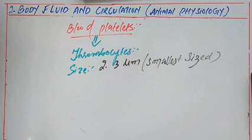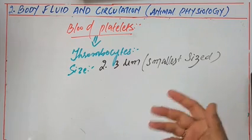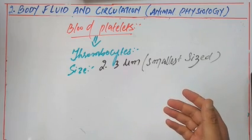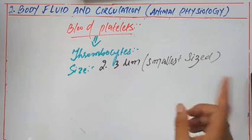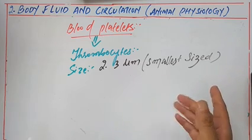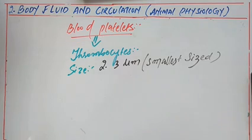Thrombocytes are found in vertebrates other than mammals. So platelets, as we know them, are found in vertebrates other than mammals.